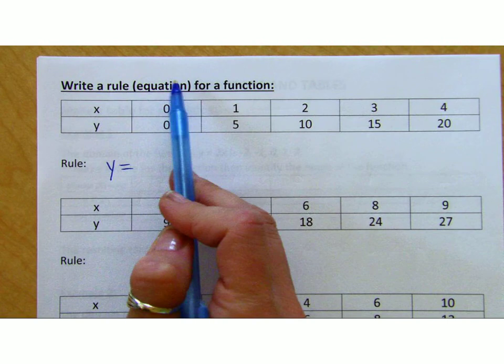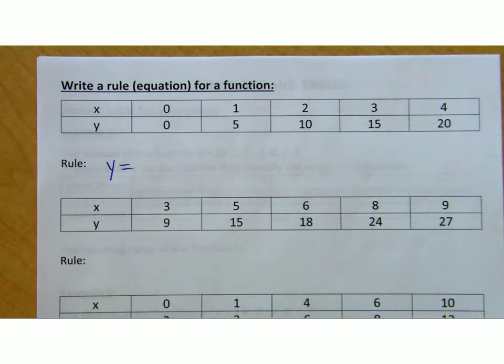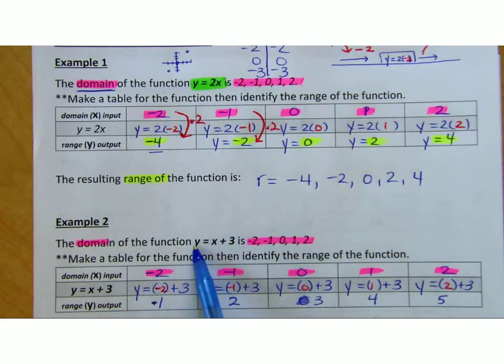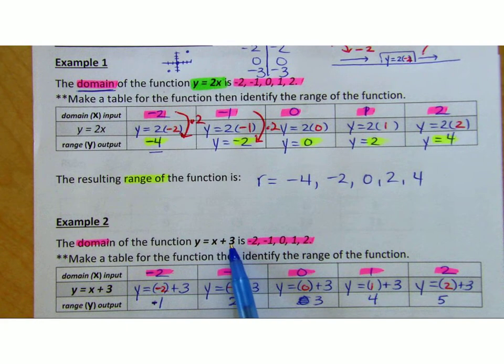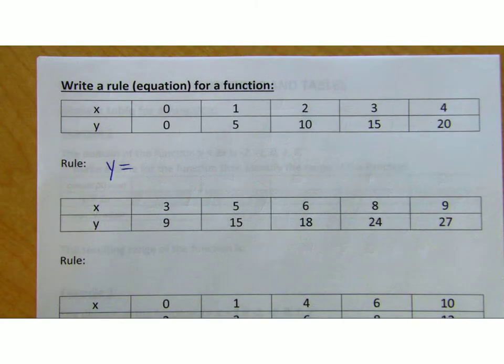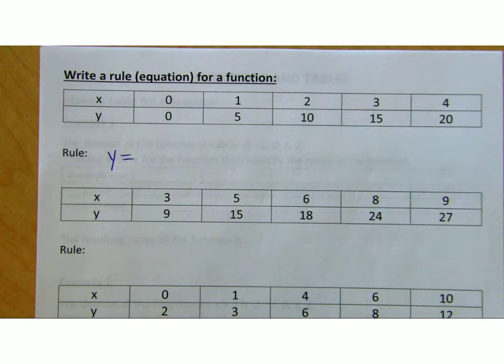I wrote the word equation here. They may not use that word on the M-STEP or the PSAT. They might say write a rule. A lot of you are like, what do you mean write a rule? A rule is basically that all of the y values are the x values plus 3. That's a rule. So a rule is kind of a fancy way of saying equation.